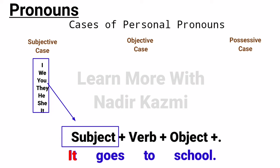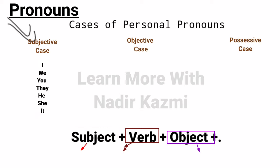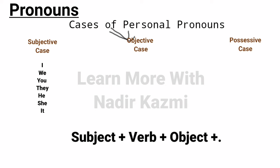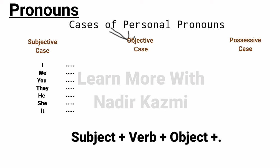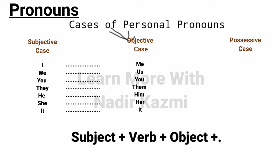In the objective case, when these pronouns are placed as objects in a sentence, they change form. I becomes me, we becomes us, you stays you, they becomes them, he becomes him, she becomes her, it stays it. For example: 'I went with Ali' — here I is the subject in subjective case, and Ali is the object (a noun). If we swap them: 'Ali went with me' — now 'me' is the objective case of I.